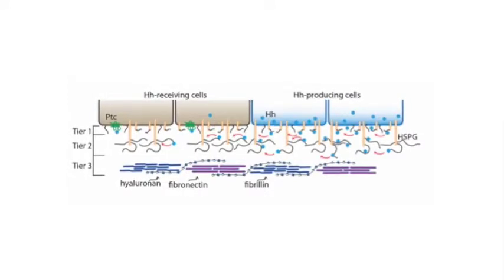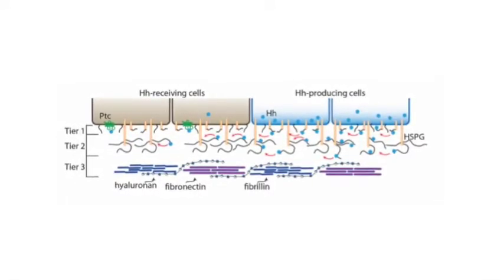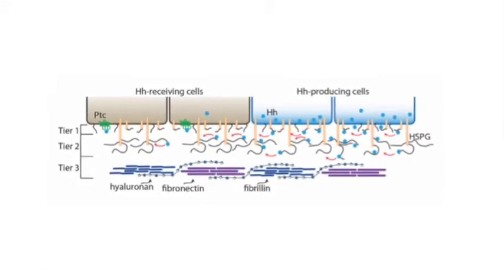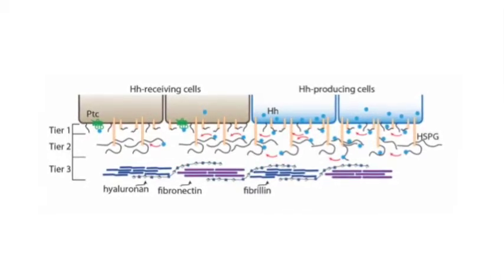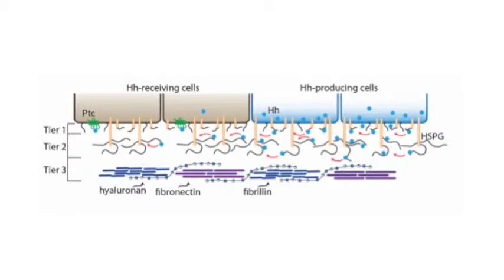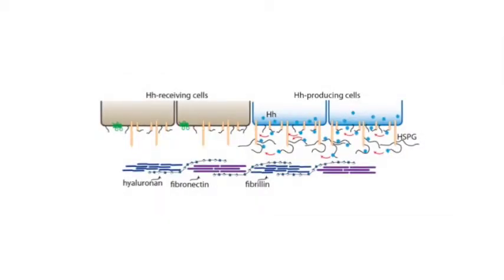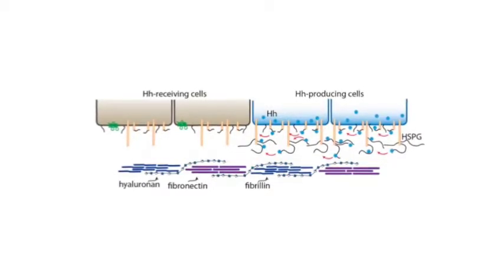Extracellular matrix is known to be important for hedgehog signal transport. In Drosophila wing imaginal disc, hedgehog is expressed in the posterior cells as shown in blue color. Hedgehog receptor, patched, is expressed in anterior cells as shown in brown. It was shown that mutant Drosophila cells that cannot synthesize proteoglycans are deficient for signal uptake and signaling.